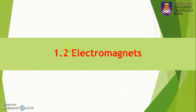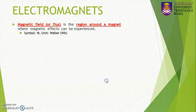Now we go to the second subtopic: electromagnets. In the previous slide we learned the concept of how to produce electromagnets. In this subtopic, we are going to see the principles and parameters we need to understand. The first parameter is the magnetic field — also called flux — which is the region around the magnet where you can feel the magnetic effects. The symbol is phi (φ) and the unit is the weber.